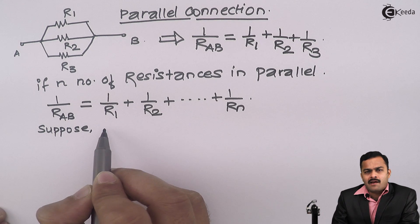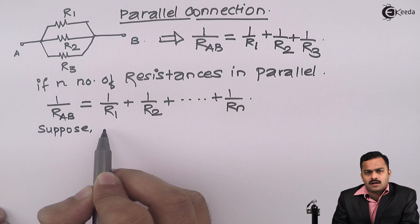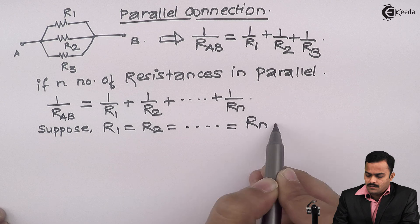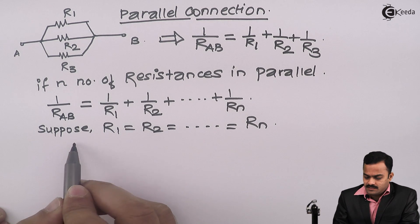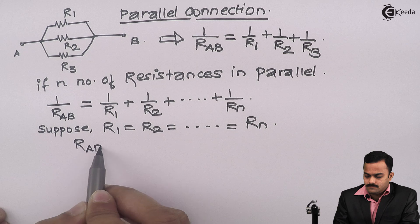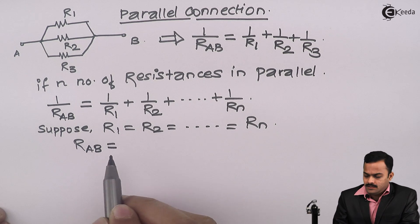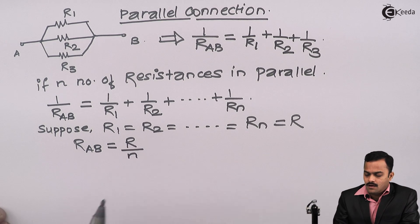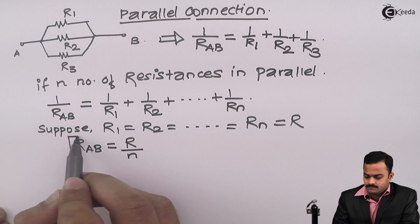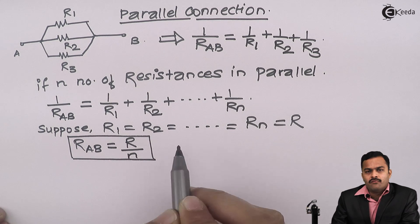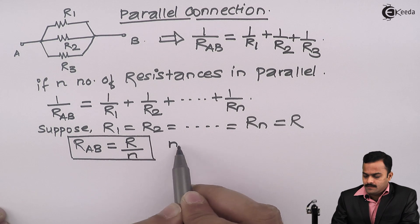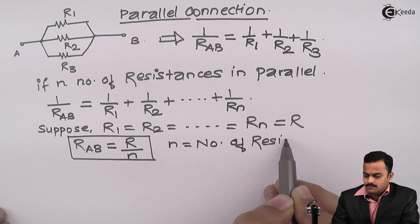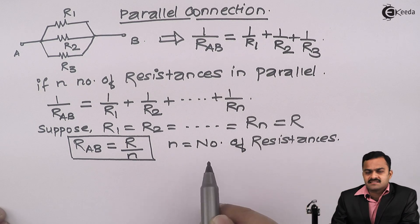Suppose all of them are having the same value, which is R. I can say the equivalent resistor will be R divided by n, where n is the number of resistances in parallel.